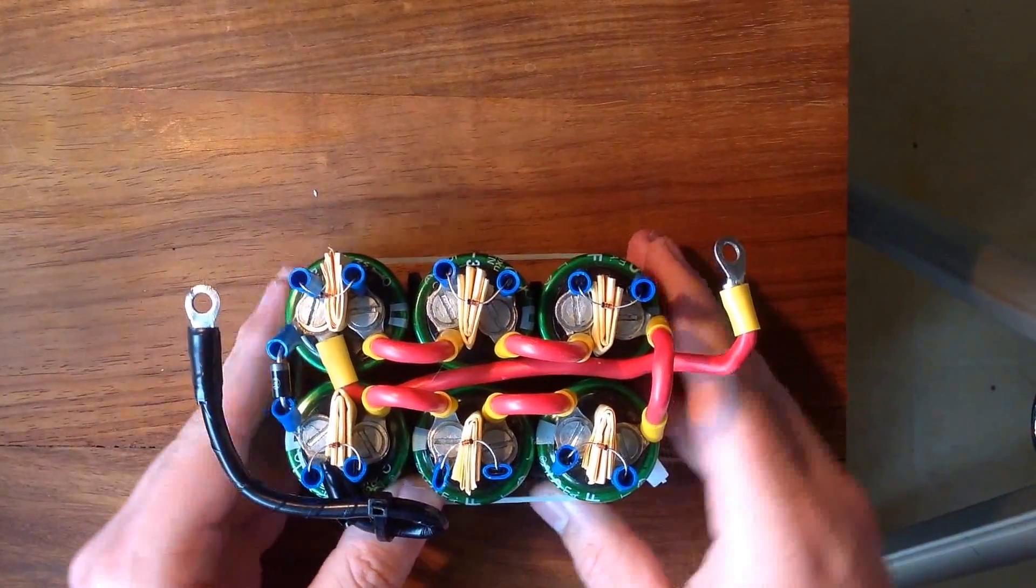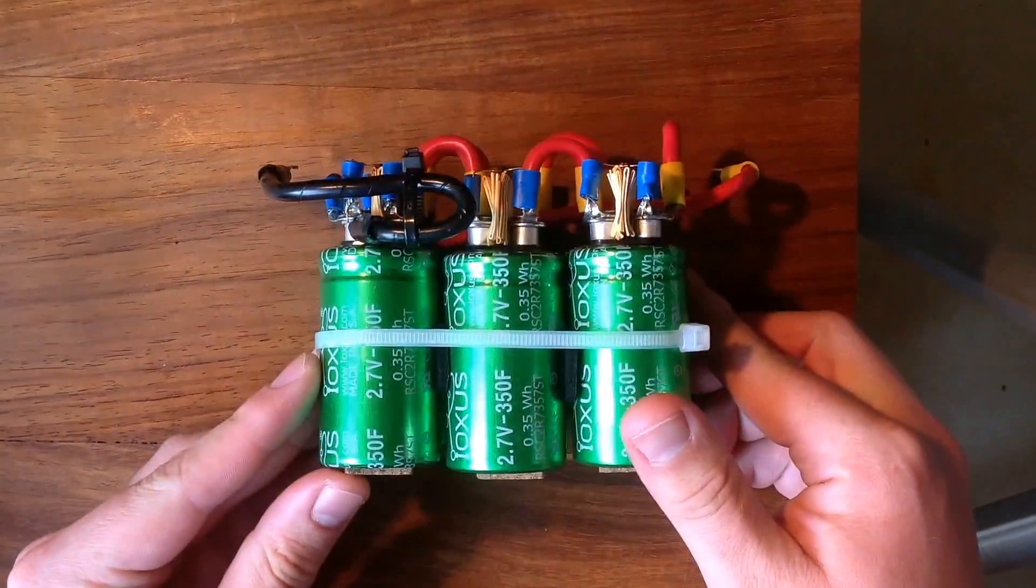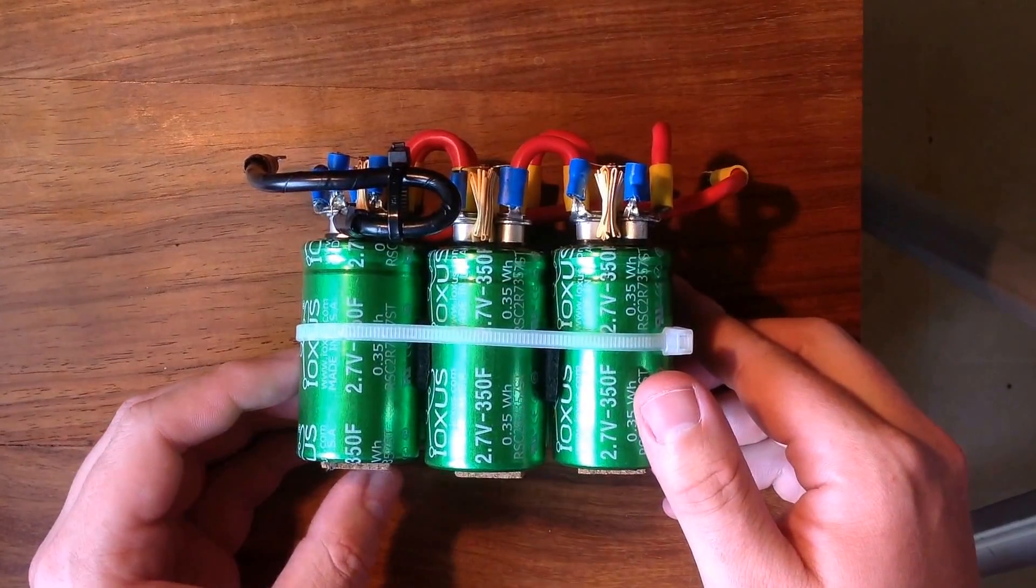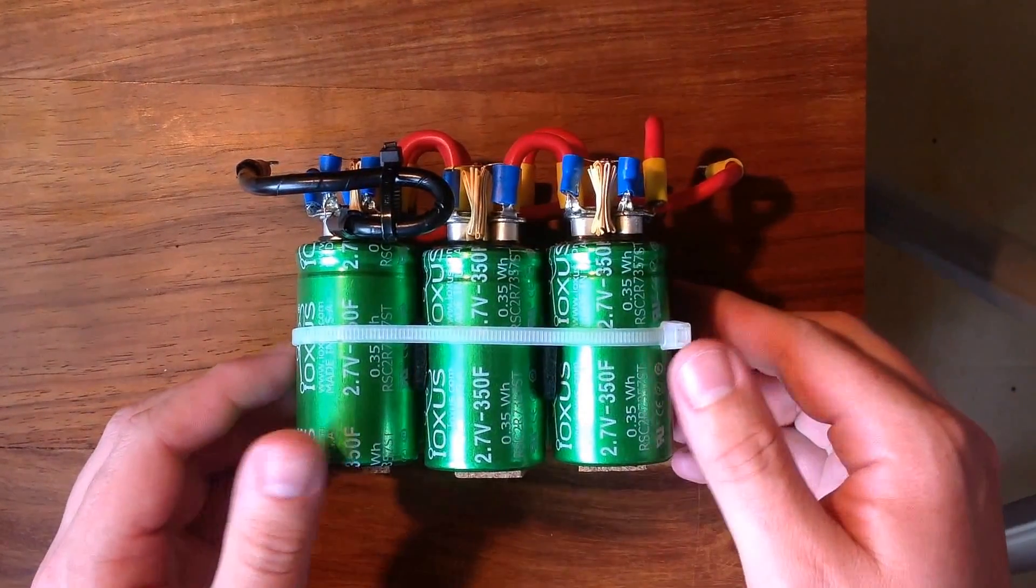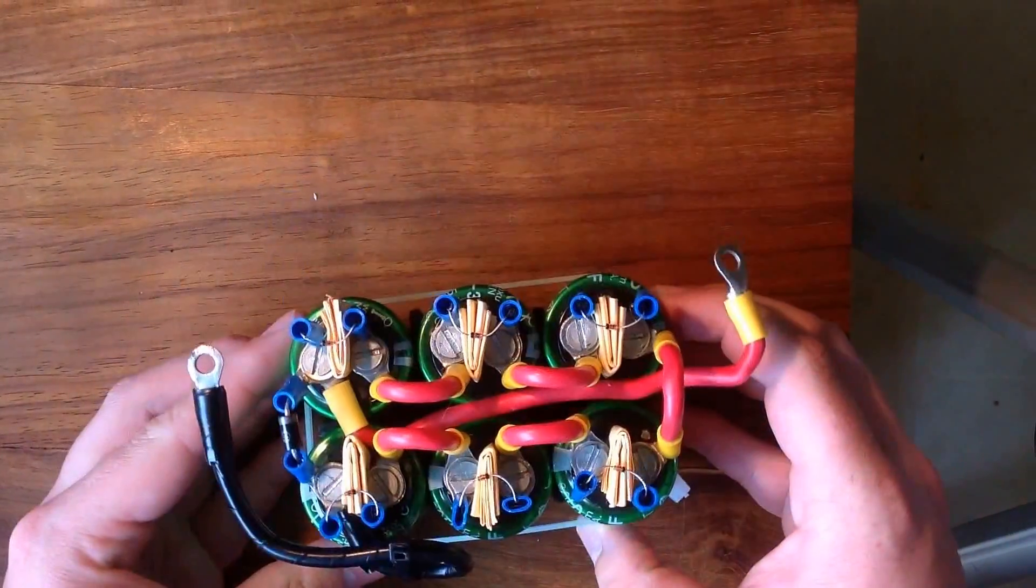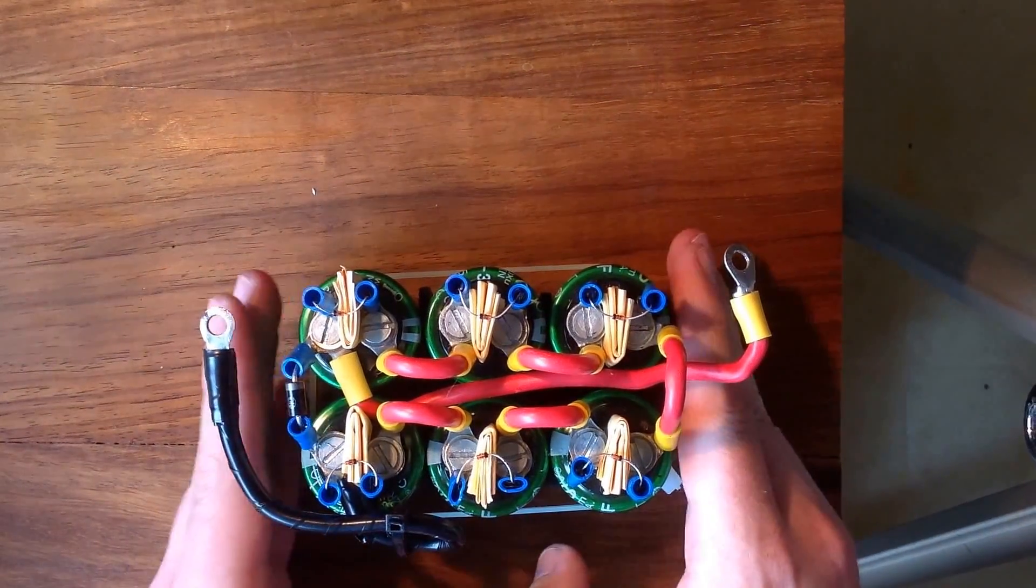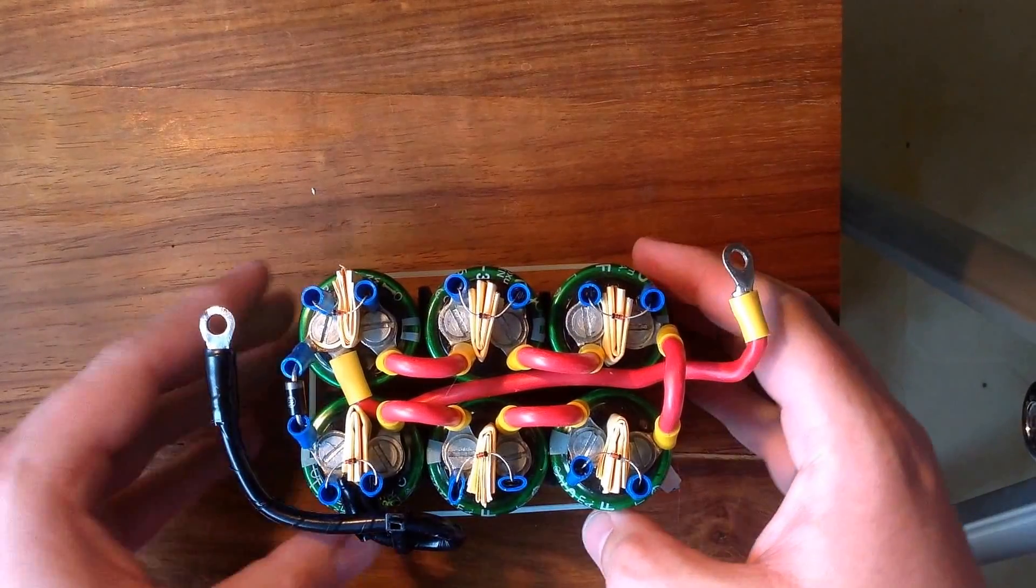Now, this is a bank of supercapacitors. To be exact, they're Ioxys 2.7 volt, 350 farad supercapacitors, which is a fair amount of capacitance. Altogether in series they wind up to 58 farads at 16 volts.